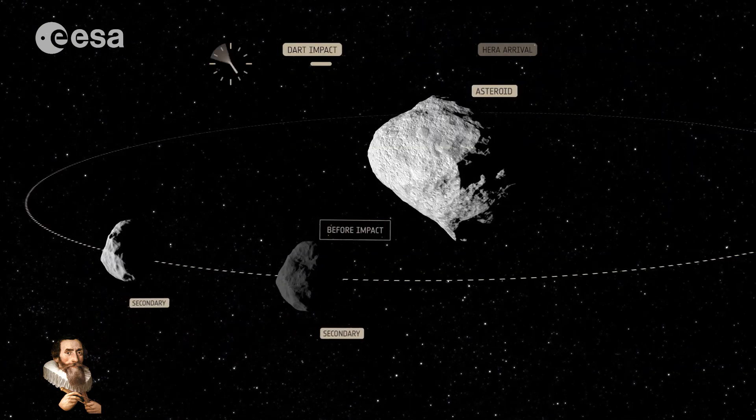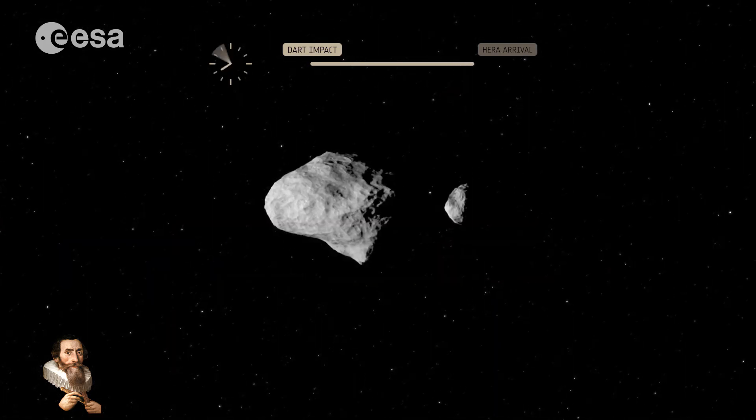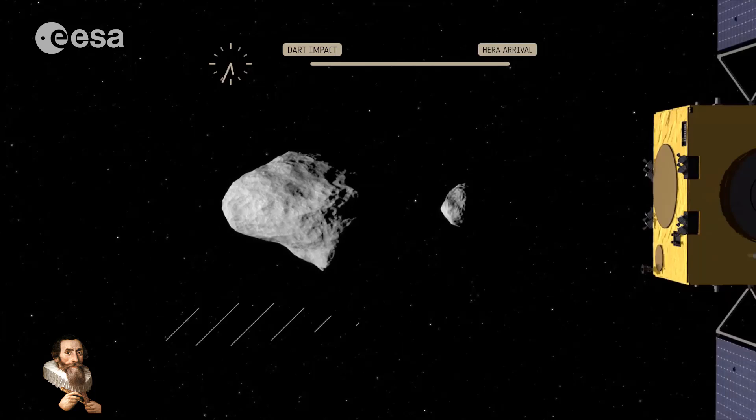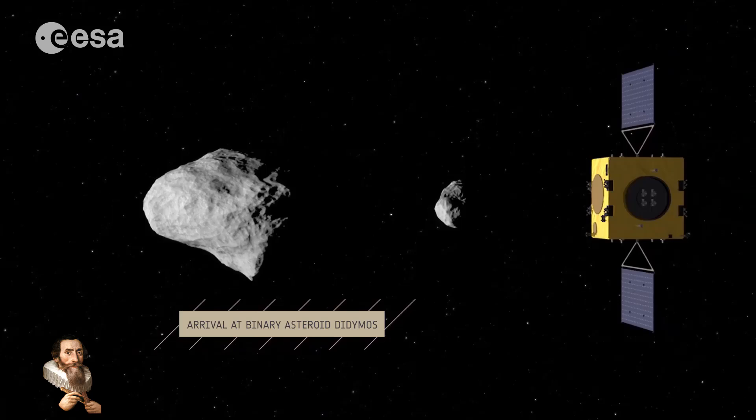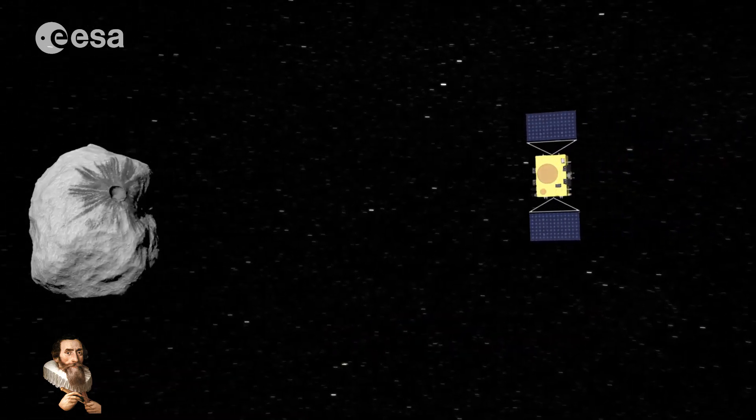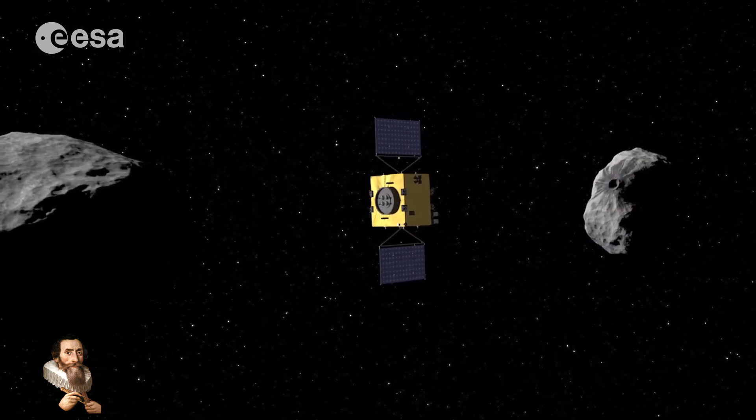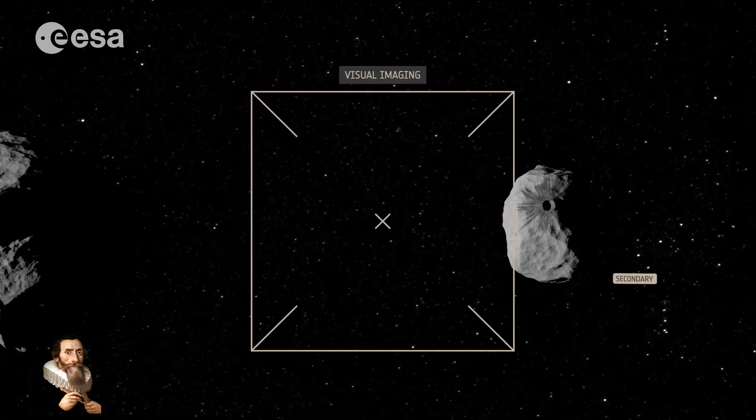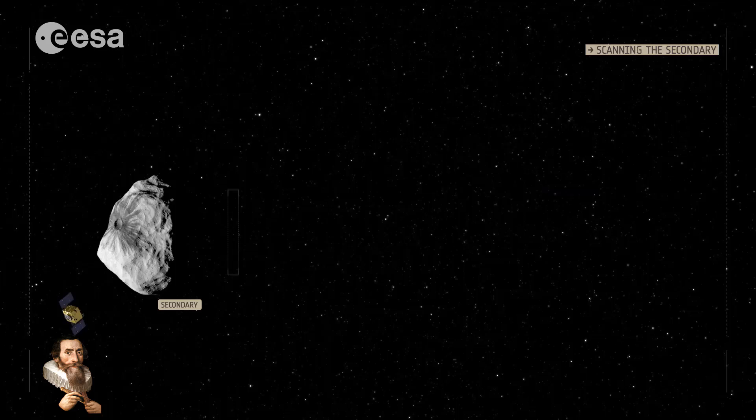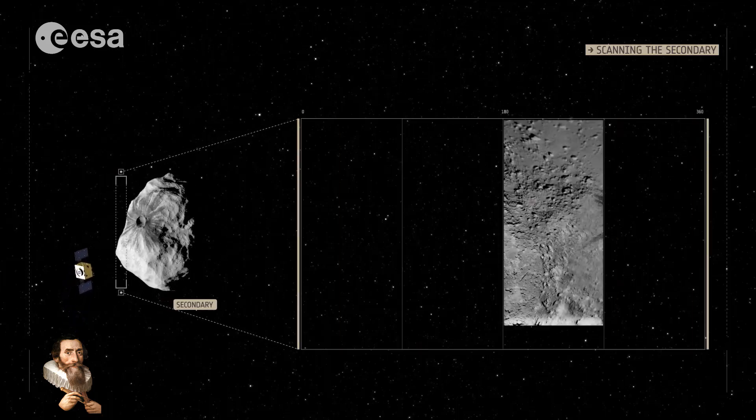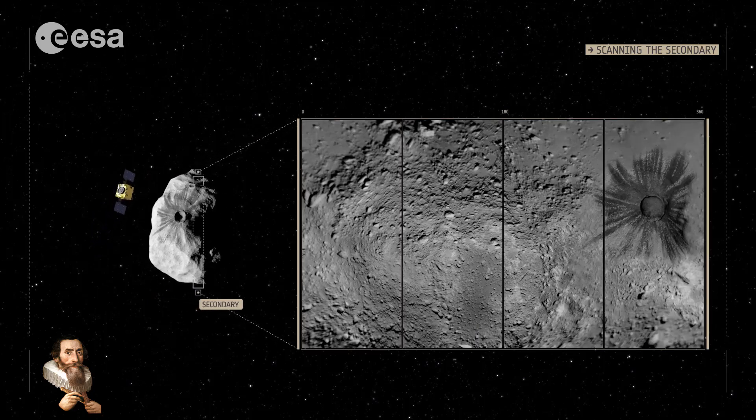HERA's primary objective is to conduct a detailed post-impact survey of Dimorphos to assess the effectiveness of the kinetic impactor technique used by the DART mission. This involves measuring the size and morphology of the impact crater, analyzing the momentum transfer, and studying the debris cloud generated by the collision. By doing so, HERA aims to validate and refine methods for deflecting potentially hazardous asteroids, contributing to global planetary defense strategies.